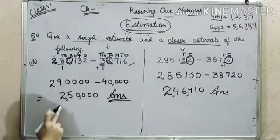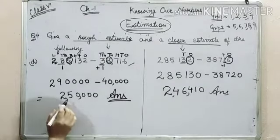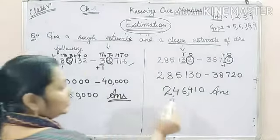Now, in rough estimation, we get the number as 2,50,000. And in closer estimate, we get the number as 2,46,410.